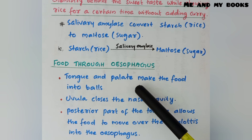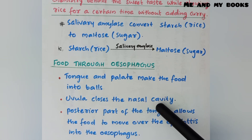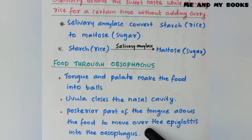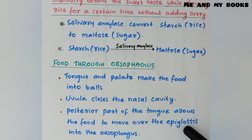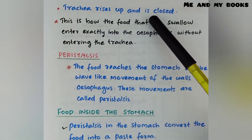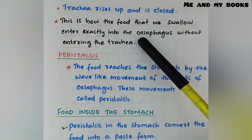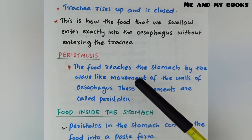From the mouth, food reaches the esophagus. The tongue and palate make the food into small balls. The uvula closes the nasal cavity so food doesn't reach the nose. The posterior part of the tongue allows food to move over the epiglottis into the esophagus. The epiglottis prevents movement of food into the trachea; the trachea rises up and closes, so food reaches the esophagus directly.